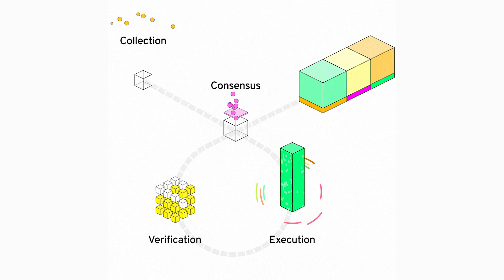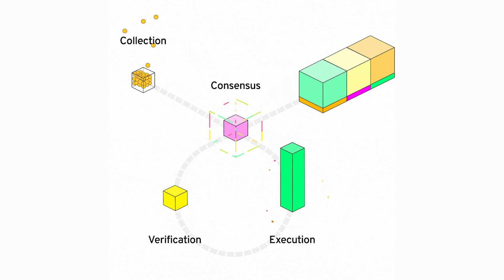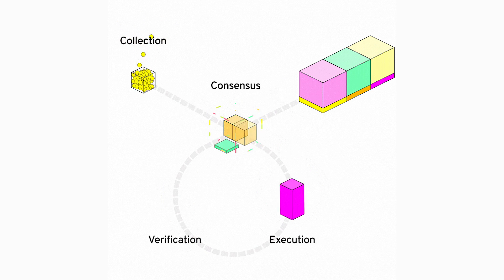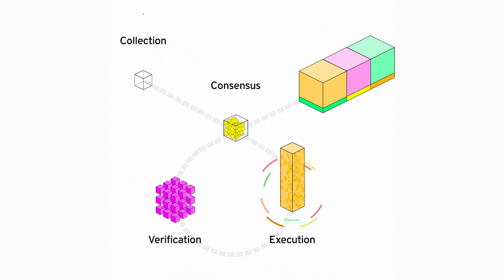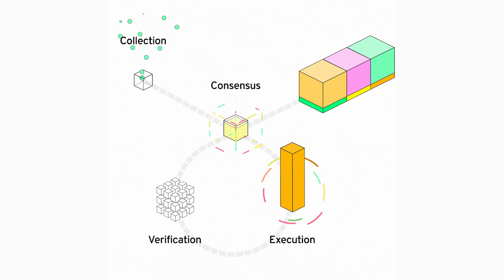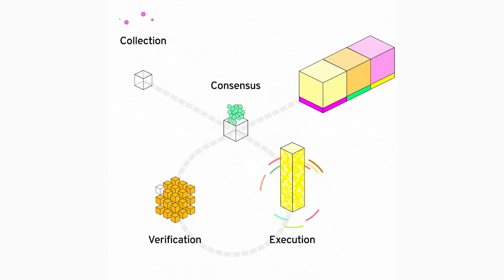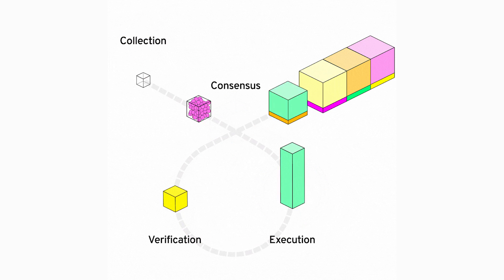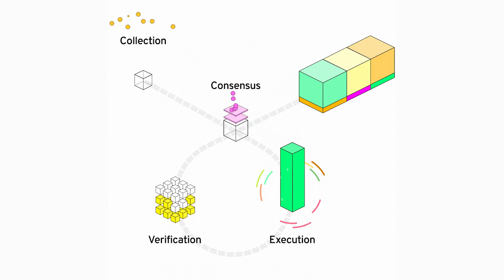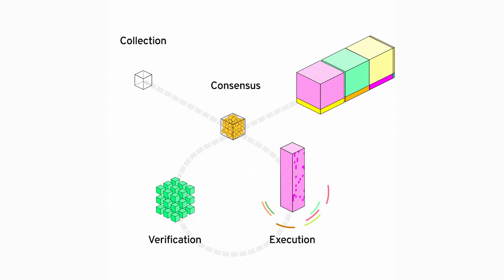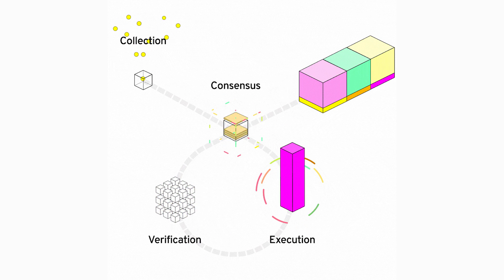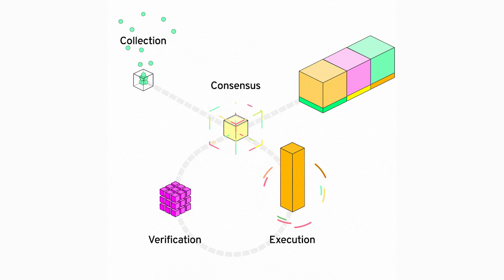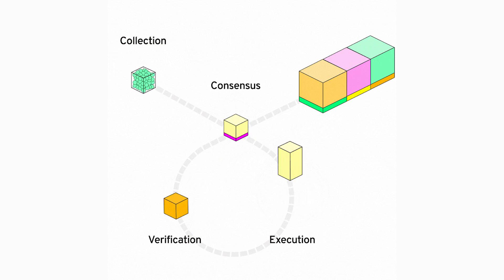Execution nodes, providing speed and scaling, form the final version of the block. Verification nodes verify that the execution nodes are functioning correctly and reject any incorrectly assembled blocks. If the block is assembled correctly, then the consensus node adds it to the blockchain. Moreover, as soon as the collection nodes have transferred the data, they begin to assemble new transaction groups.